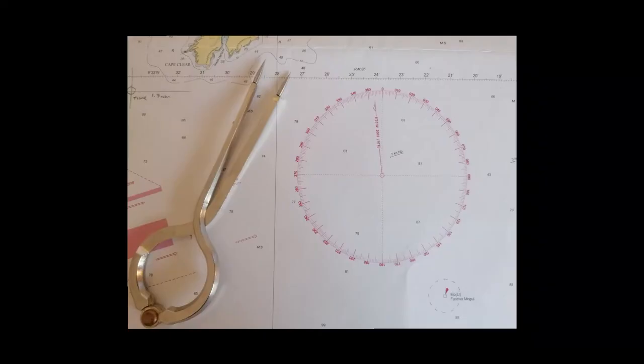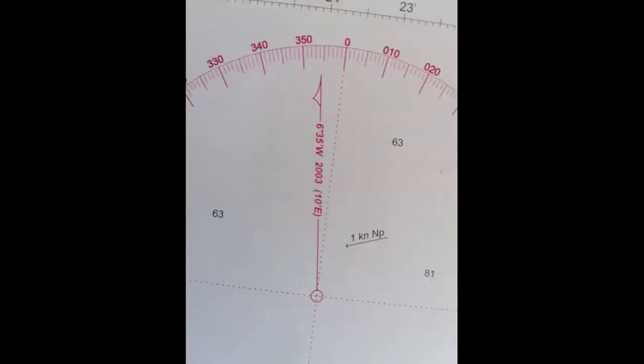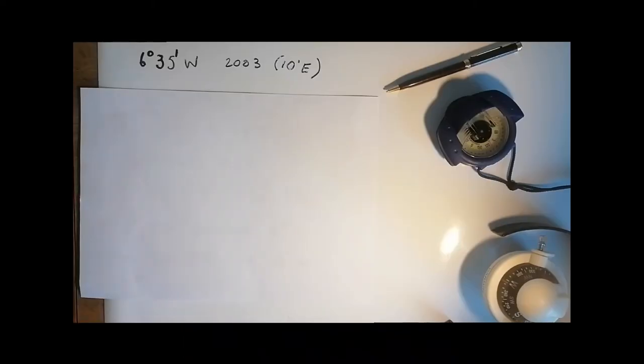If we take a close look at the compass rows on the chart, and we have a close look into the centre of the rows, it's giving us a set of numbers. These numbers represent the variation, the difference between the chart, true north and magnetic north at a specific time.